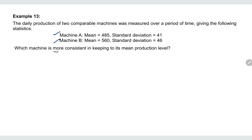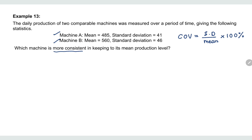Which machine is more consistent in keeping to its mean production? To know which machine is more consistent, we must compare the coefficients of variation of both machines — Machine A and Machine B. The machine with the smaller coefficient of variation is more consistent. Let's recall the formula: CV equals the standard deviation divided by the mean, times 100%.